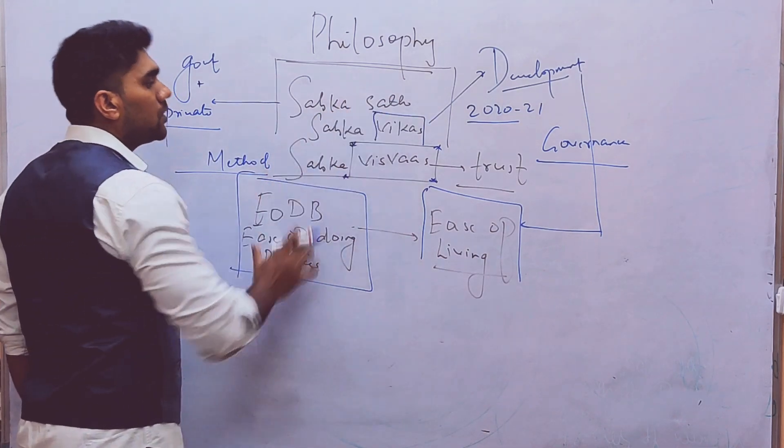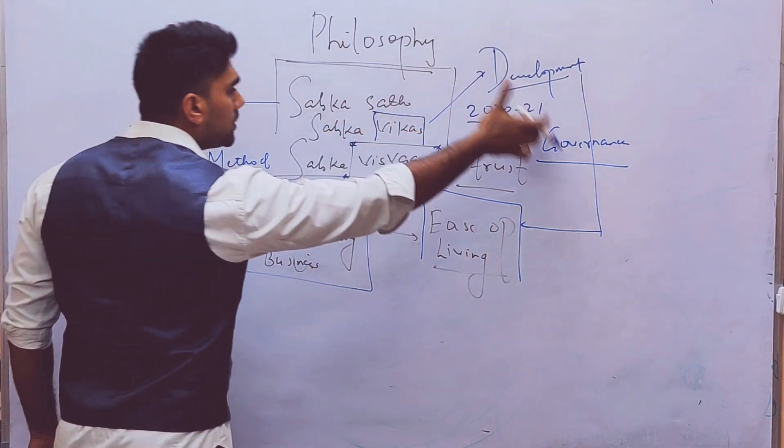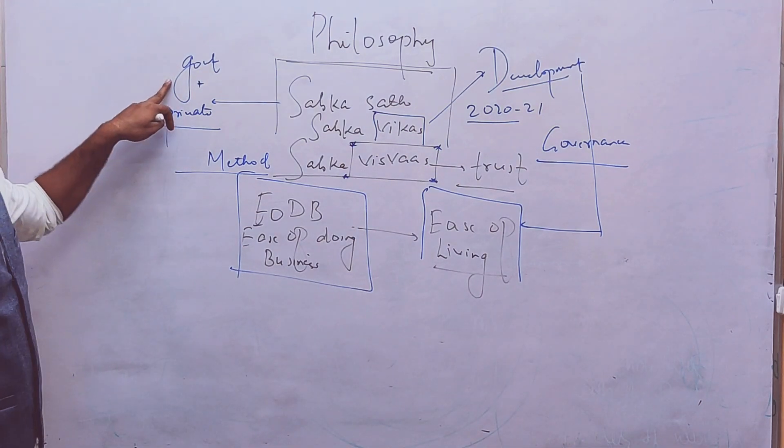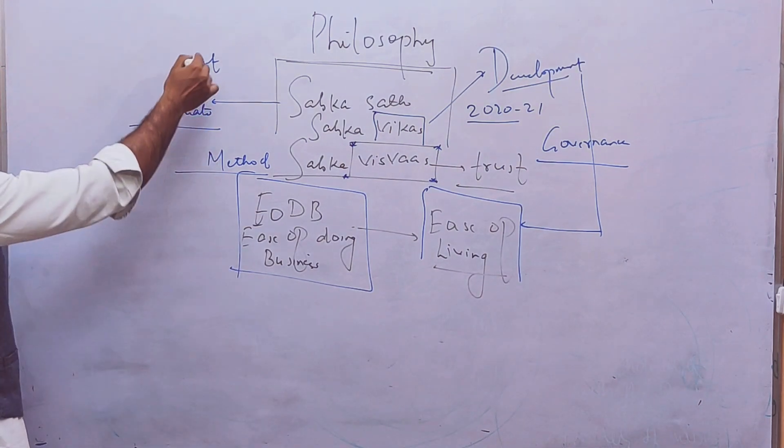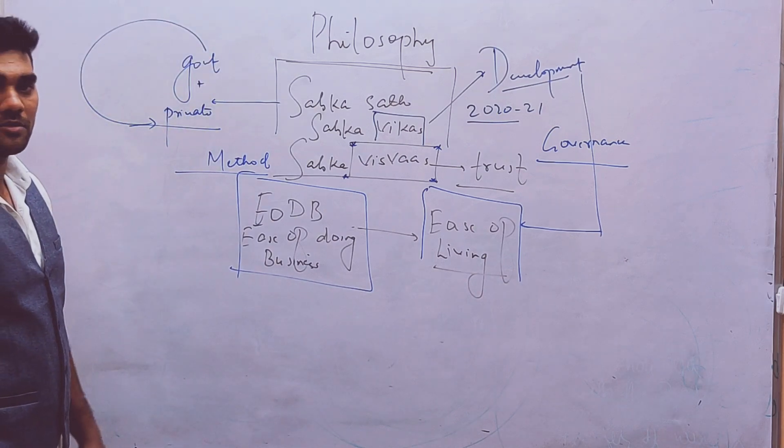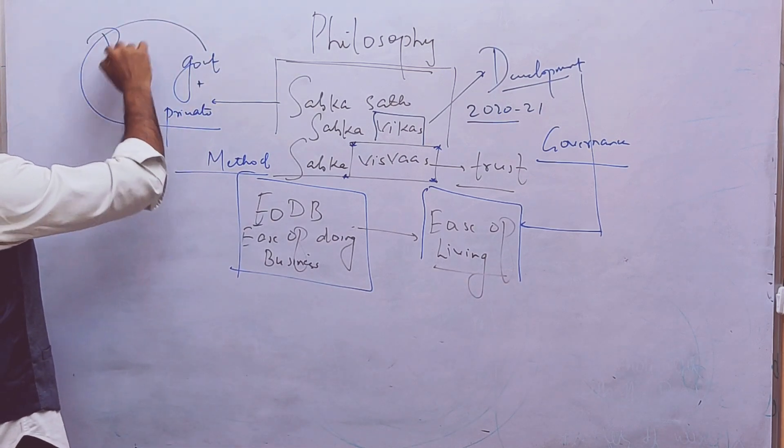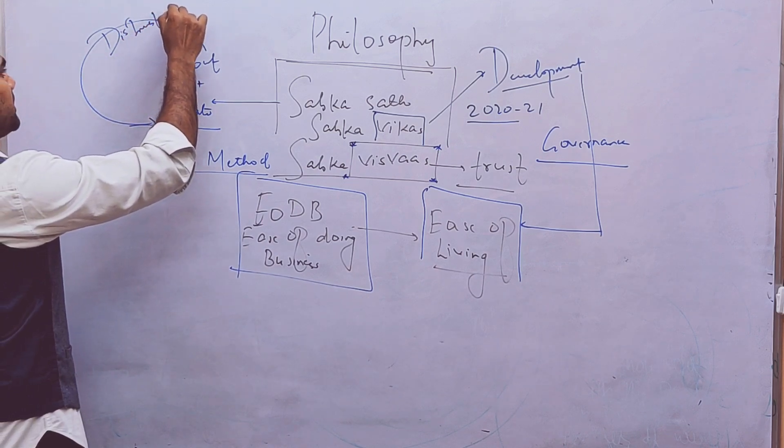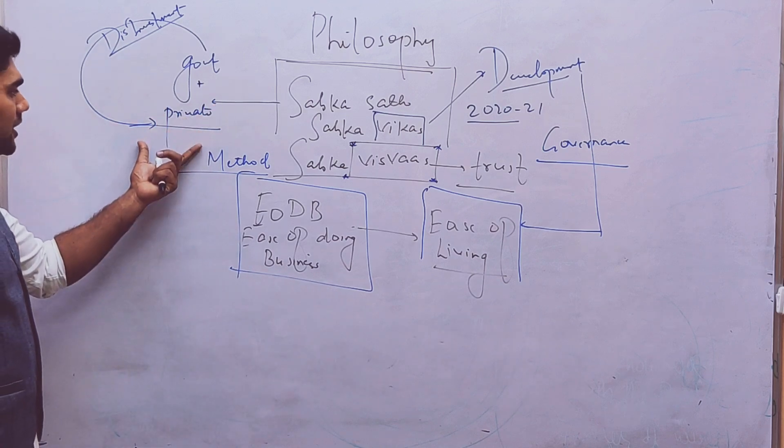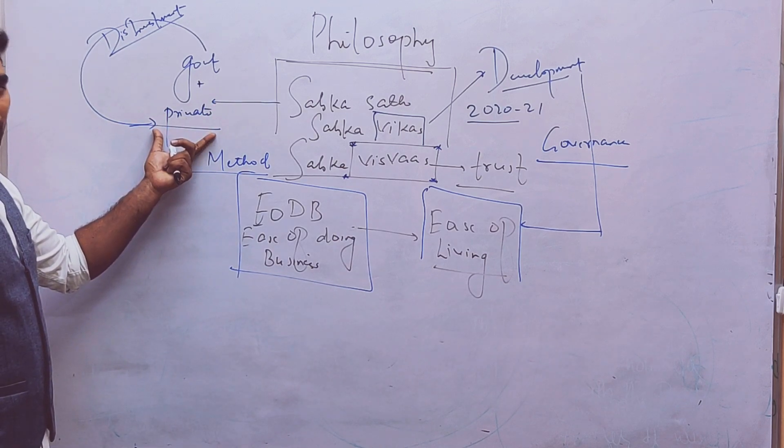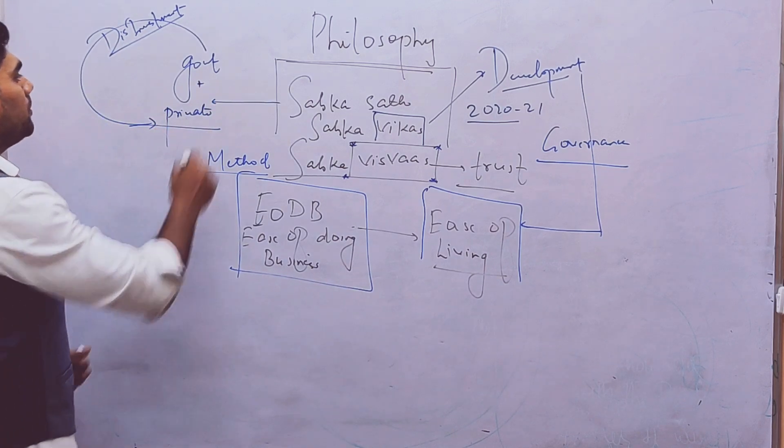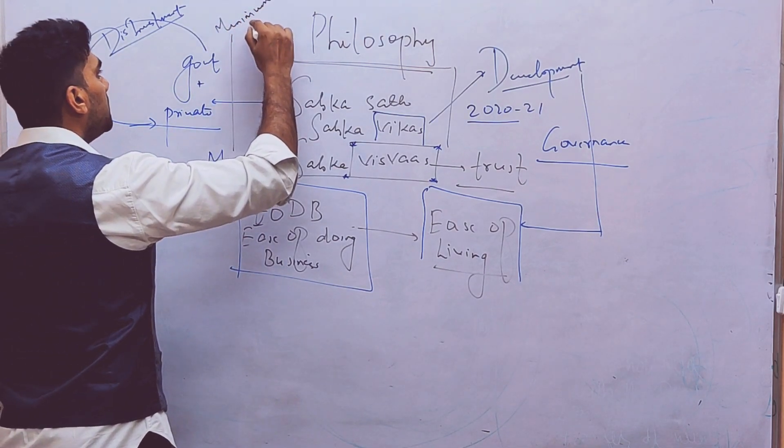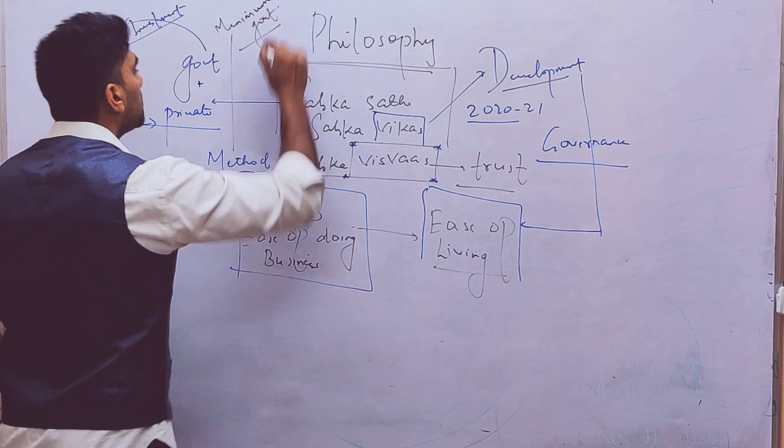So we can also call it as governance. Now the logic here is with the participation of the private sector - Sabka Saath - we are going to promote the governance. So that is why only government is not enough. The government should shed some responsibility to the private sector. That can be called as disinvestment. Government's disinvestment means the private sector's role will also increase. Can we call it minimum government?